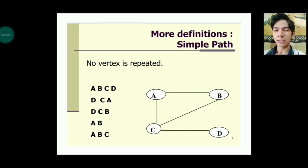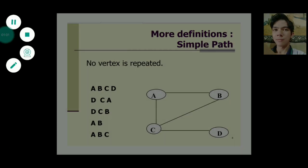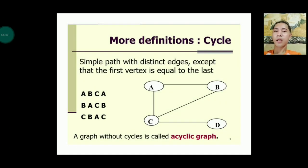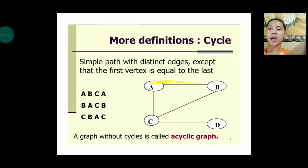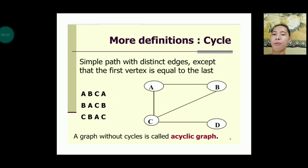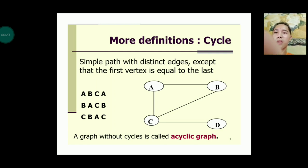A cycle is a simple path with distinct edges except that the first vertex equals the last. Examples include a, b, c, a and b, a, c, b. A graph without cycles is called an acyclic graph — for example, graph d, where there is no connecting line between b and d.